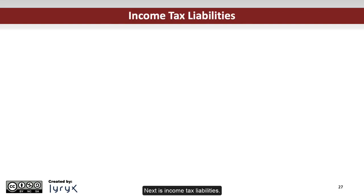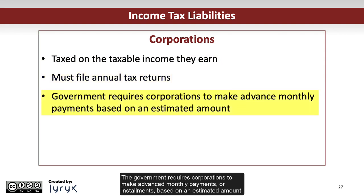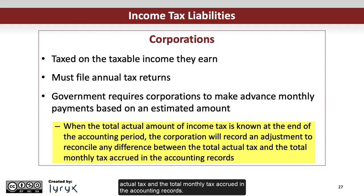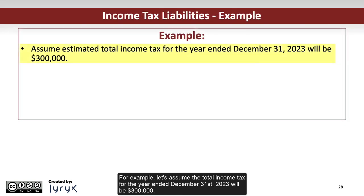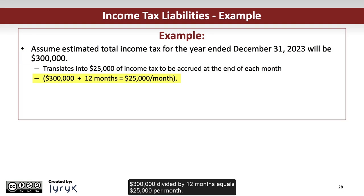Next is Income Tax Liabilities. Corporations are taxed on the taxable income they earn and must file annual tax returns. The government requires corporations to make advance monthly payments or installments based on an estimated amount. For example, let's assume the total income tax for the year ended December 31, 2023 will be $300,000. This translates into $25,000 of income tax to be accrued at the end of each month — $300,000 divided by 12 months equals $25,000 per month.